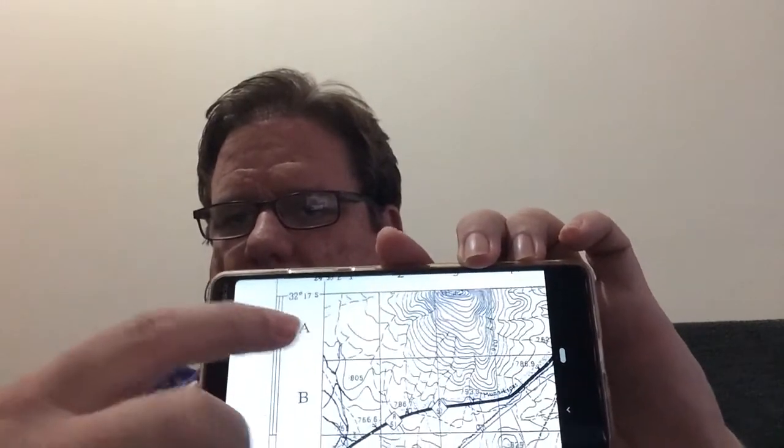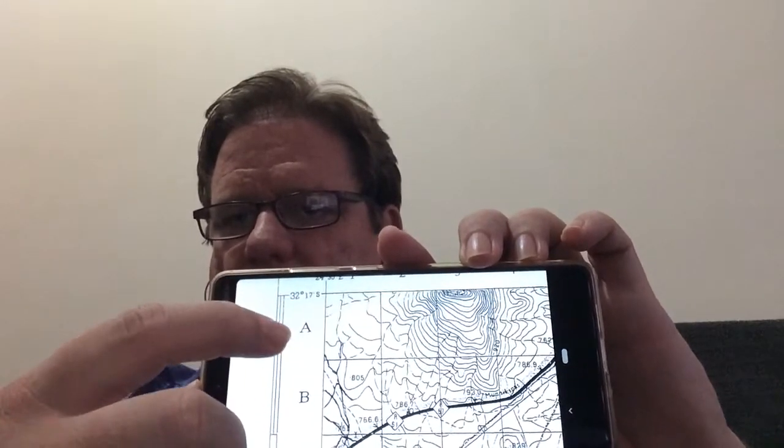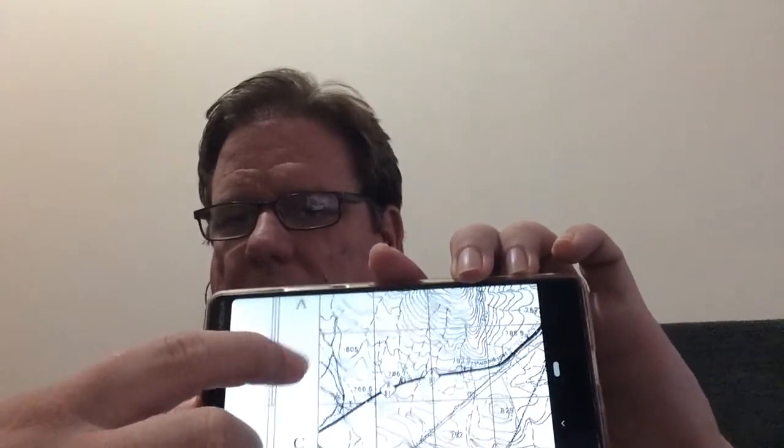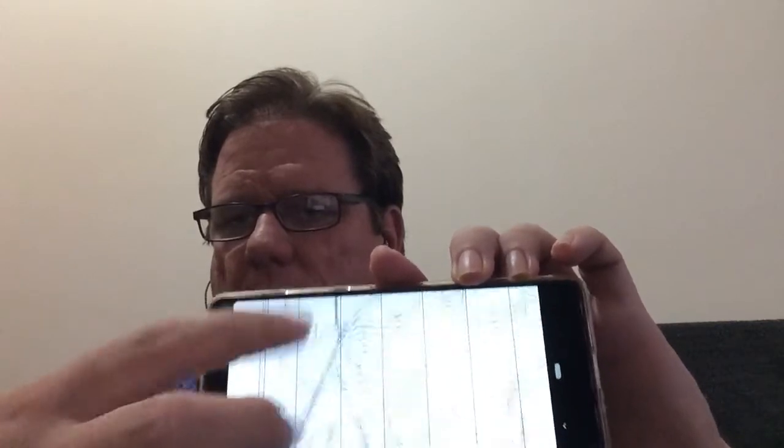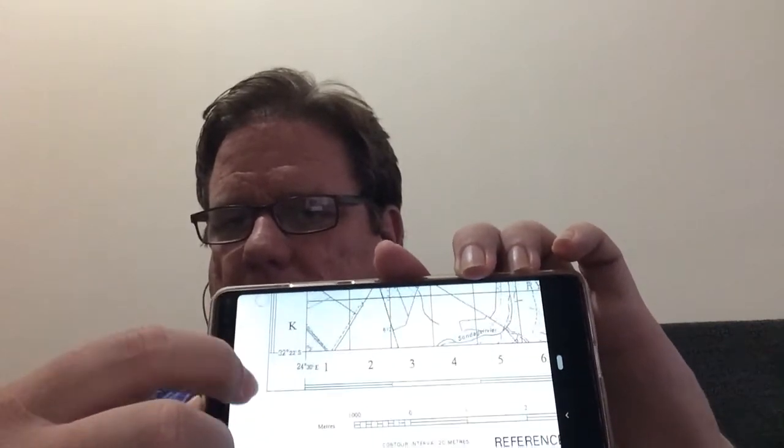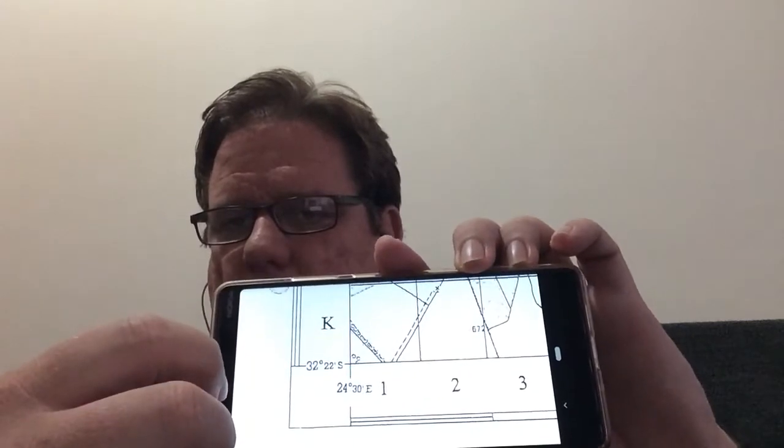and then it would be 32, 17, and then it would go 18, 19, etc., as we go down all the way to the bottom of the map. And it would go all the way to 22,